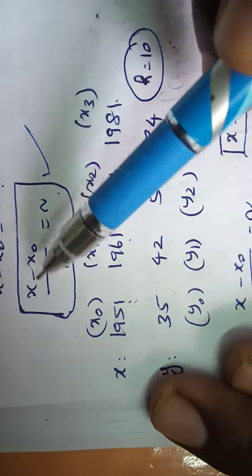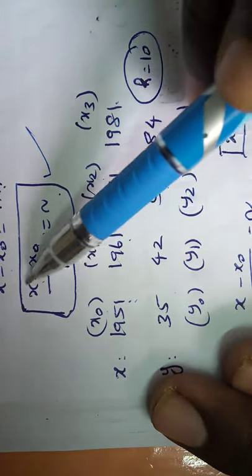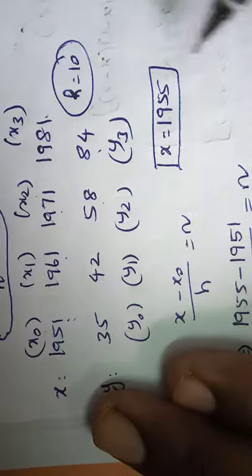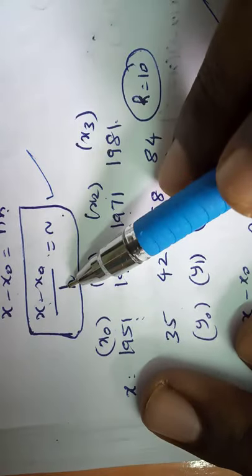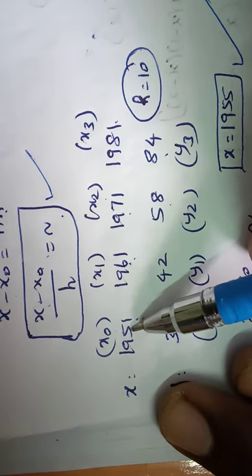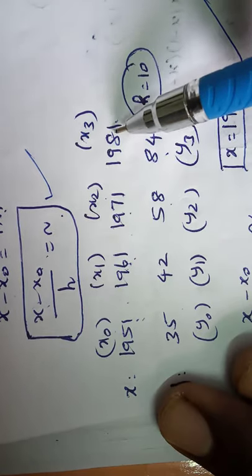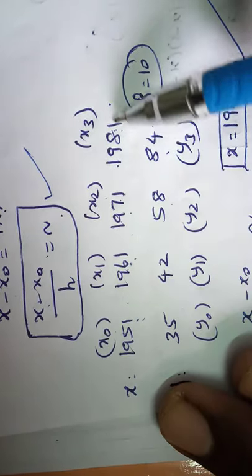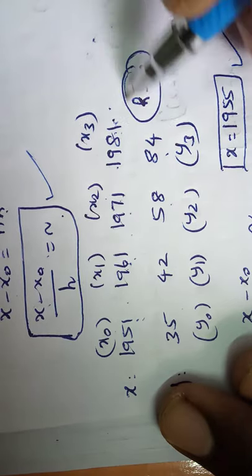First, we identify our values. x₀ is taken as 1951. The computation value x is 1955. The step size h is found by subtracting consecutive year values: 1961 − 1951 = 10, 1971 − 1961 = 10, 1981 − 1971 = 10. So h = 10, confirming the data is given at equal intervals. Since equal intervals are given, we apply the Newton forward formula for interpolation.